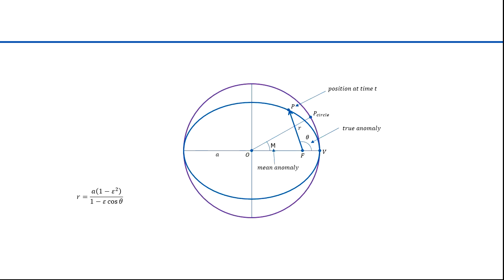Kepler then drew a vertical line through P up to the circle to a point on the circle Q. Let's draw that position vector from the origin to Q. This angle is called the eccentric anomaly. Here's Kepler's equation. It says the mean anomaly M is equal to the eccentric anomaly E minus the eccentricity epsilon times the sine of E. He worked out this formula for theta. This equation is based on epsilon, the eccentricity, and E, the eccentric anomaly.